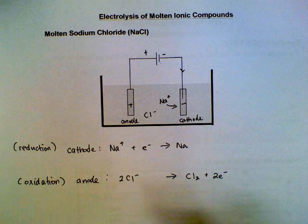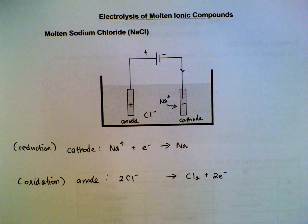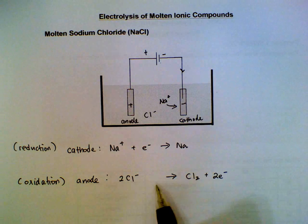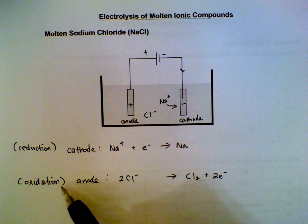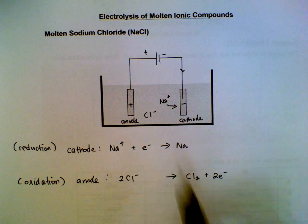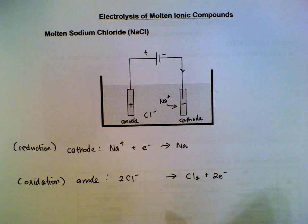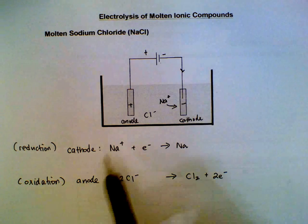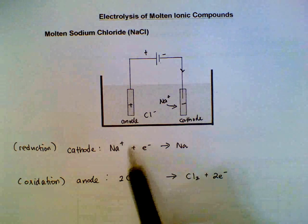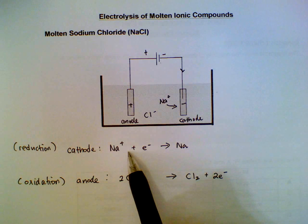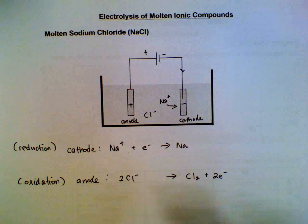This is the equation for the anode. Losing electrons is oxidation, so these are what we call half equations. When you're required to write half equations for the cathode, you'll be writing the top one. For the anode, you'll be writing the second reaction.